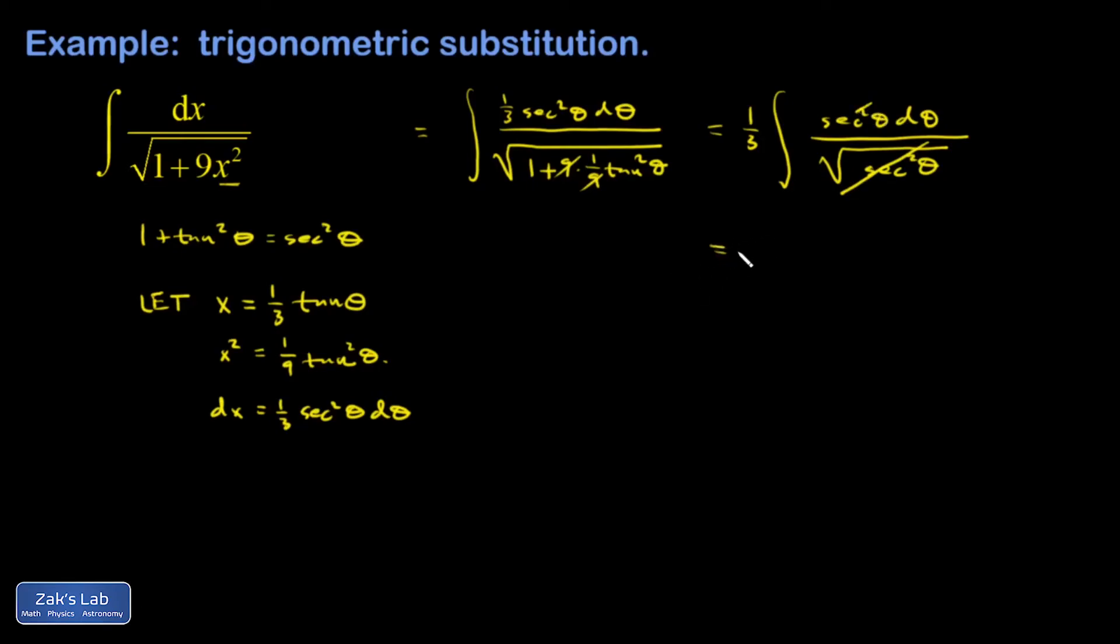It leaves me with 1/3 integral secant theta d theta, which is just natural log absolute value secant theta plus tangent theta plus C. Now there's a bit that we still have to do. I have to get this back in terms of X.